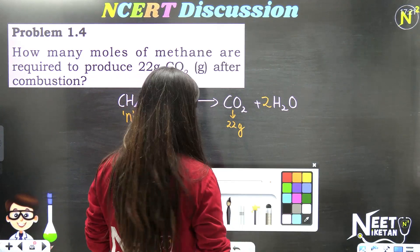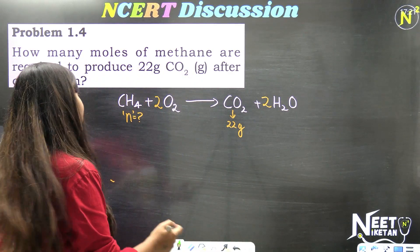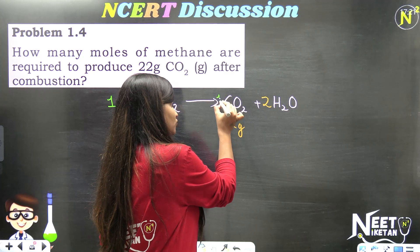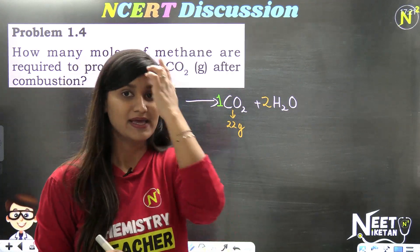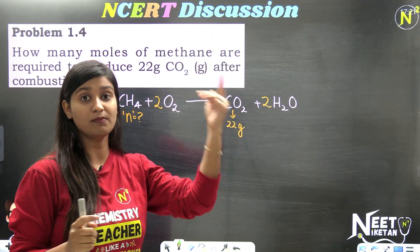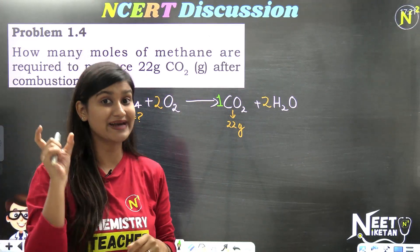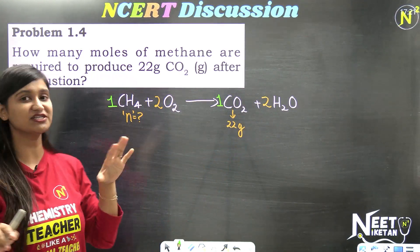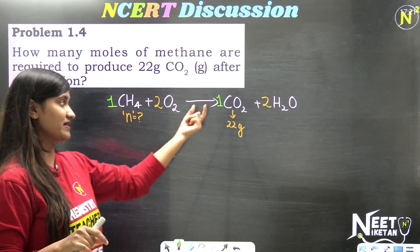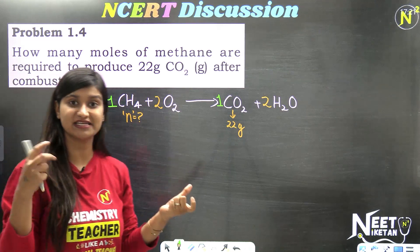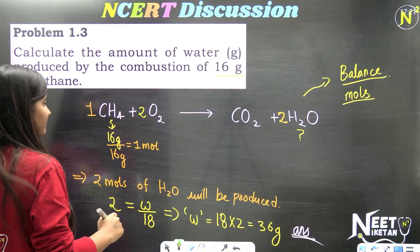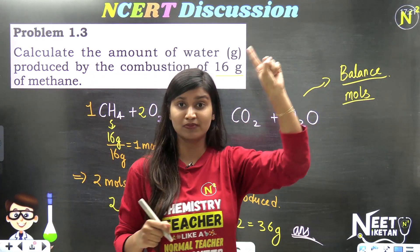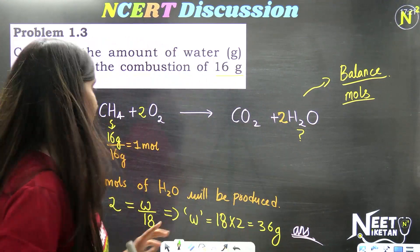From the balanced equation, 1 mole methane produces 1 mole CO2. Remember: relate using moles, not grams. 22 grams of CO2 does not mean we need 22 grams of CH4. But 1 mole CO2 requires 1 mole CH4.